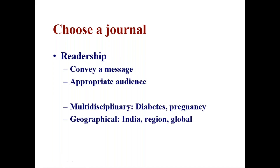The next criterion is the readership of a journal — whether the message you want to convey will reach an appropriate audience. For example, if your paper is likely to be of multidisciplinary interest — say gestational diabetes — that would interest obstetricians, gynecologists, endocrinologists, and internists. You would want to choose a journal read by all these groups.